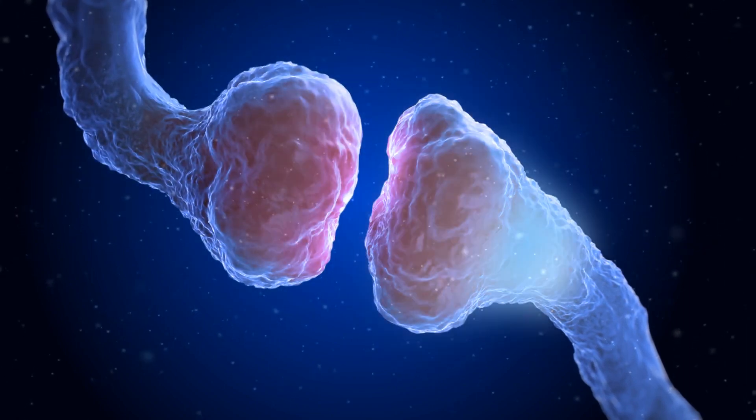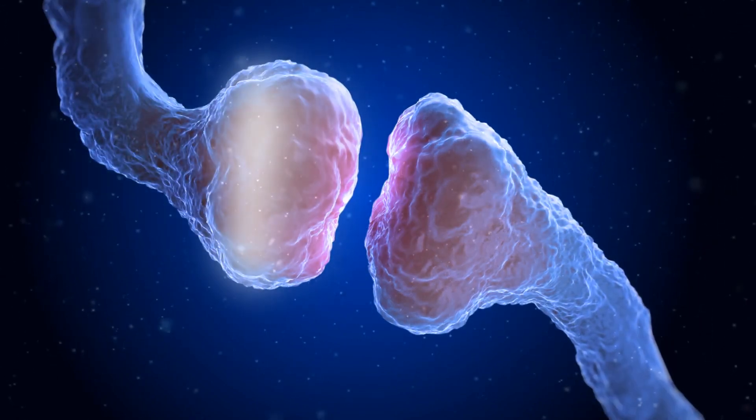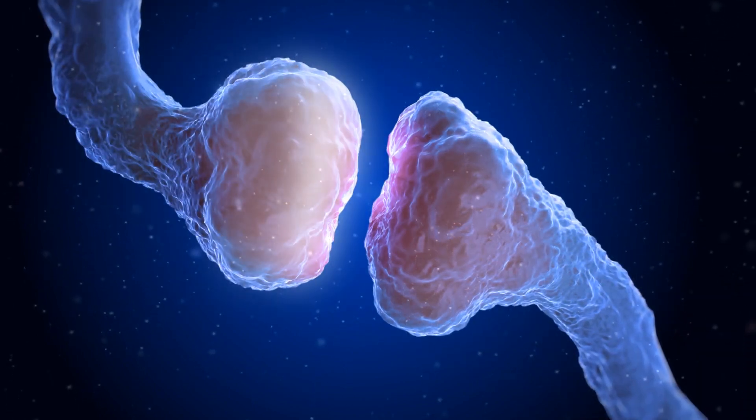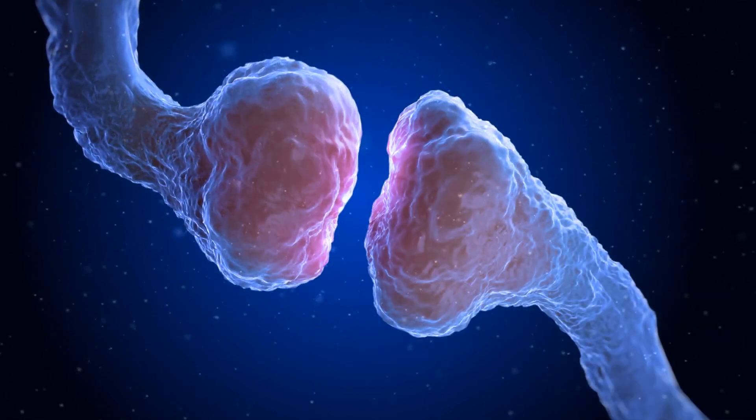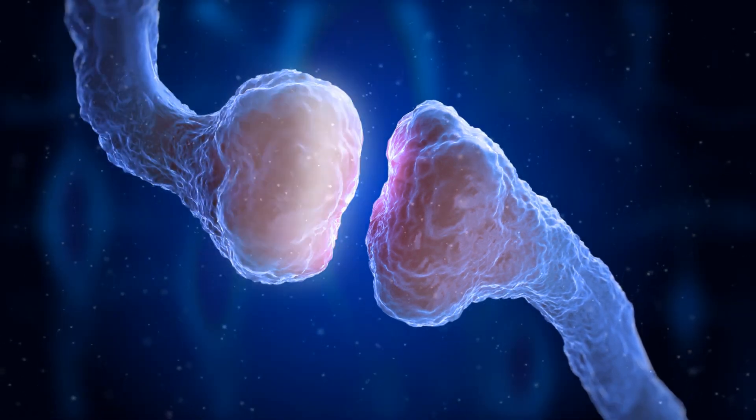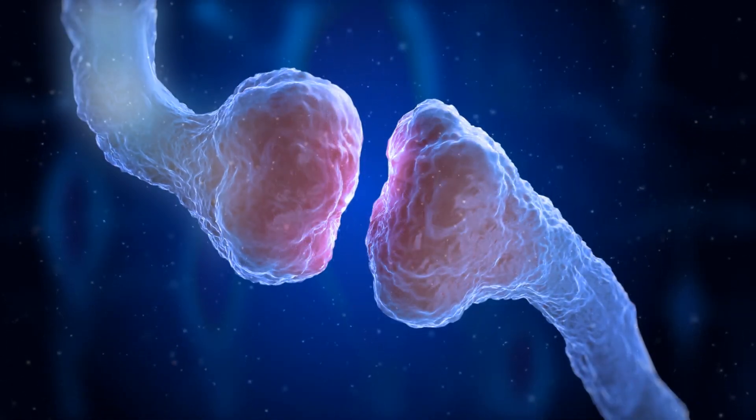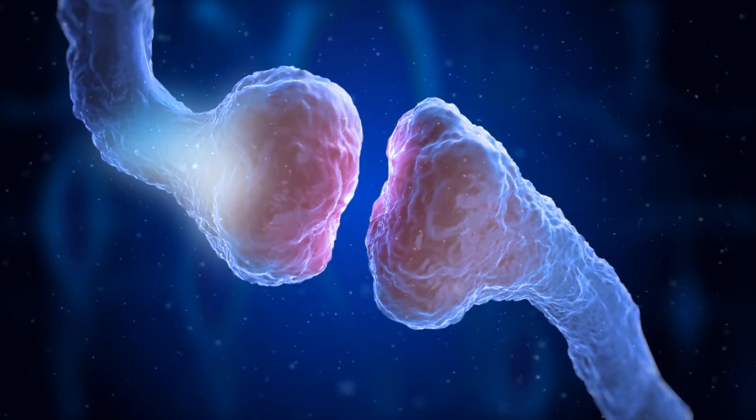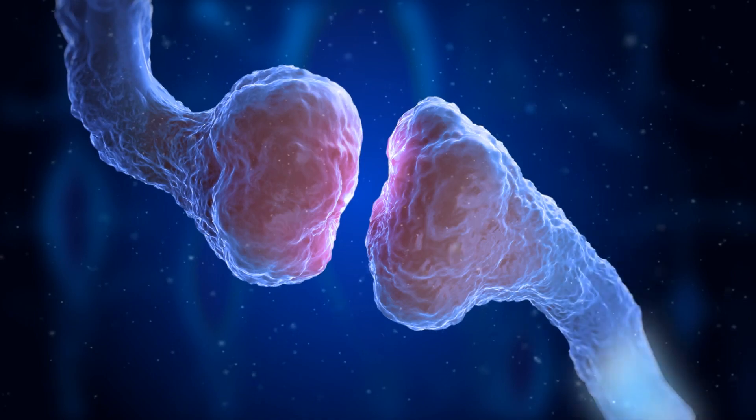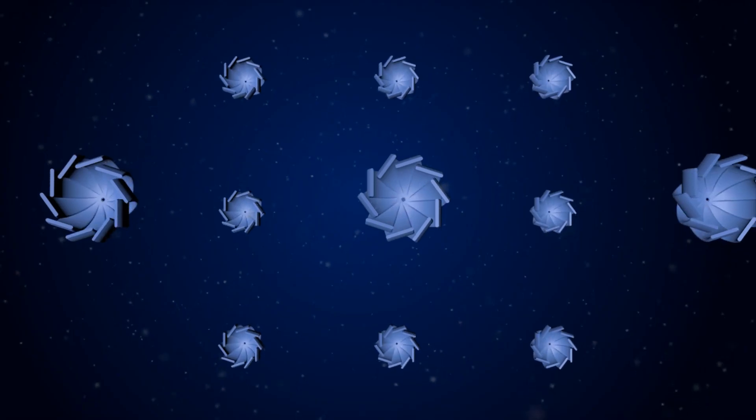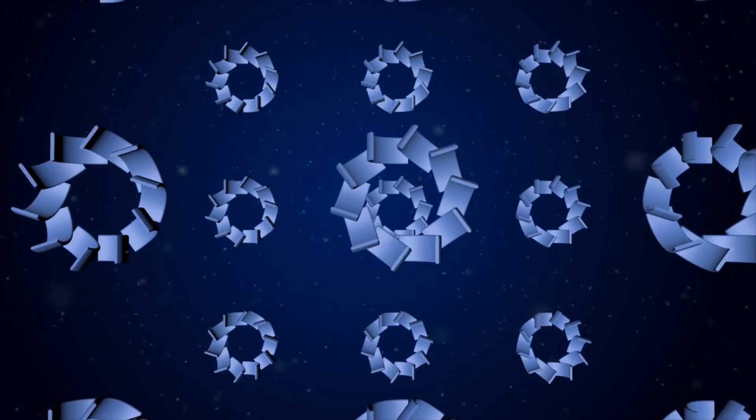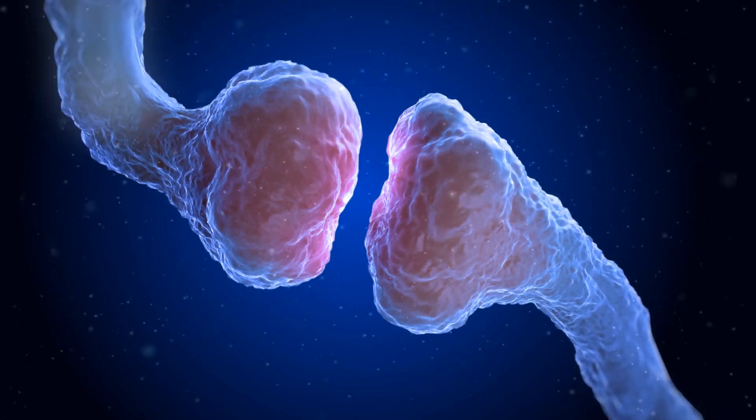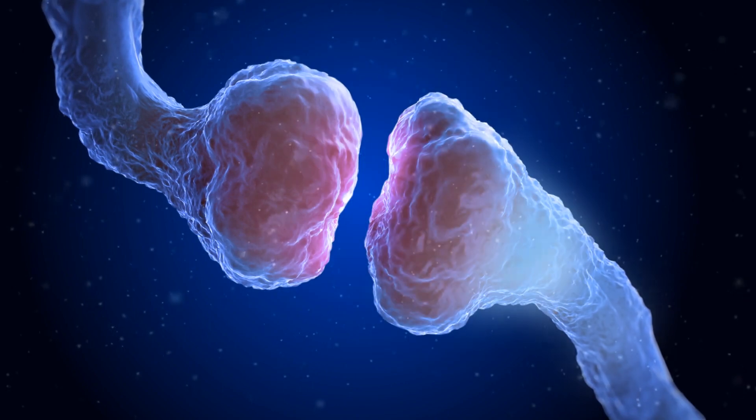When stimulated, these sacs release their molecules, which cross the cell membrane into the synaptic gap. An electric zap allows this to happen. Meanwhile, the receiving neuron has special welcome sites for the incoming molecules. These receptor sites bind with the molecules. When they do, special gates open up.